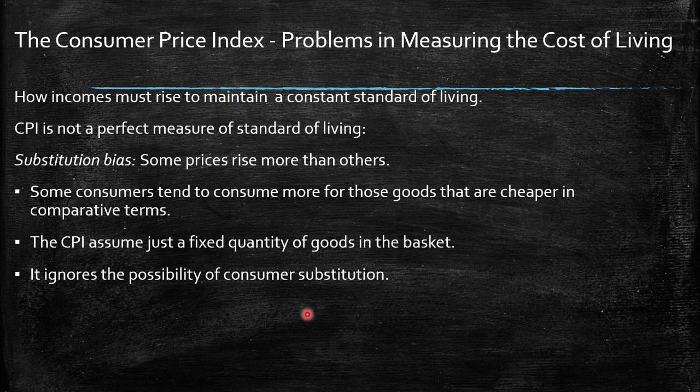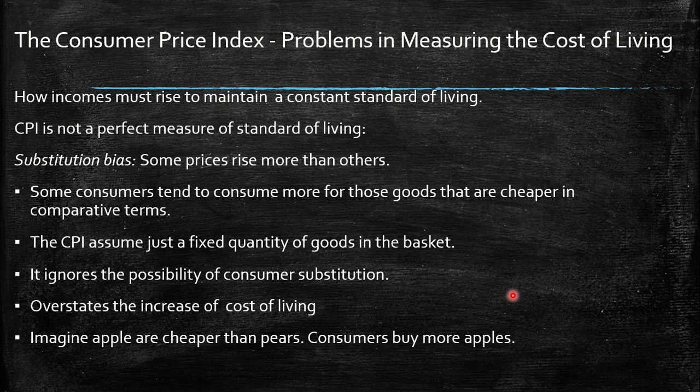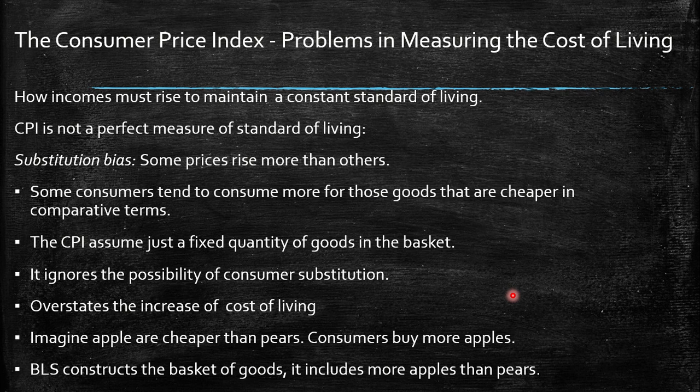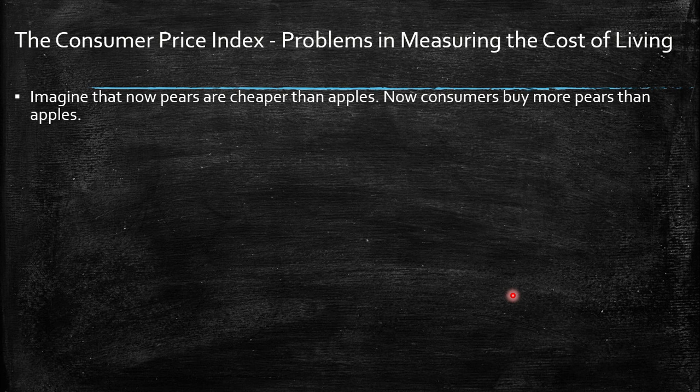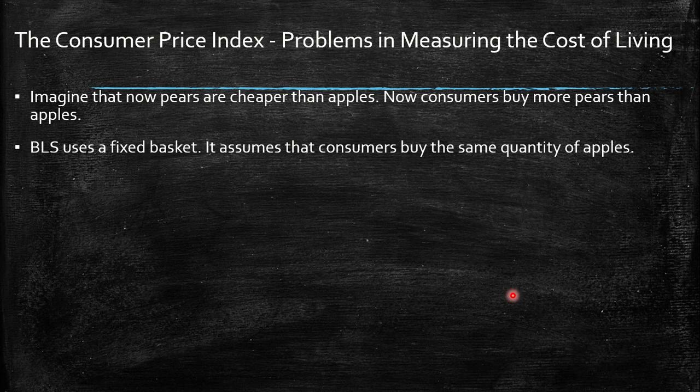Because the CPI ignores consumer substitution, it overstates the increase in the cost of living. A simple example: the BLS basket includes more apples than pears, but if pears become cheaper than apples, consumers buy more pears. Since the BLS uses a fixed basket, it assumes consumers keep buying the same quantity of apples, which is wrong. This leads to a measured inflation that is larger than it really is.